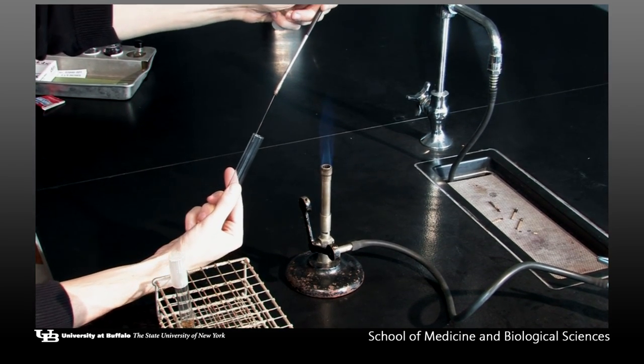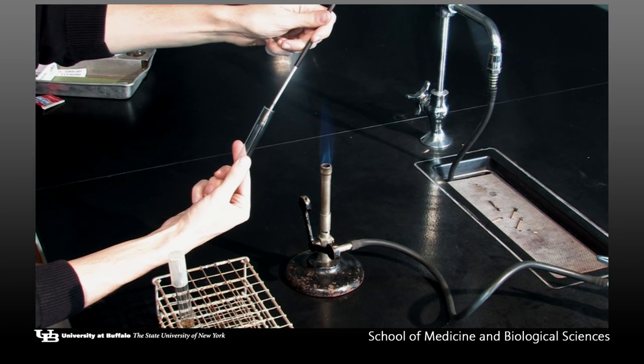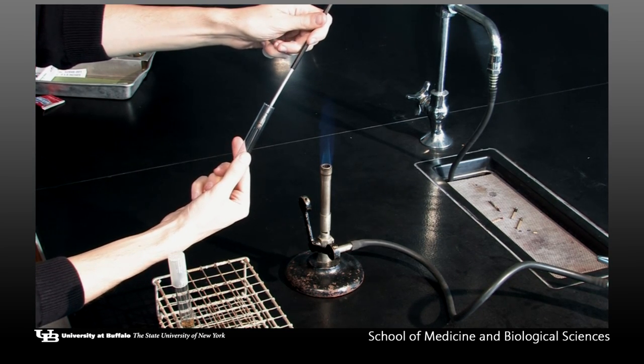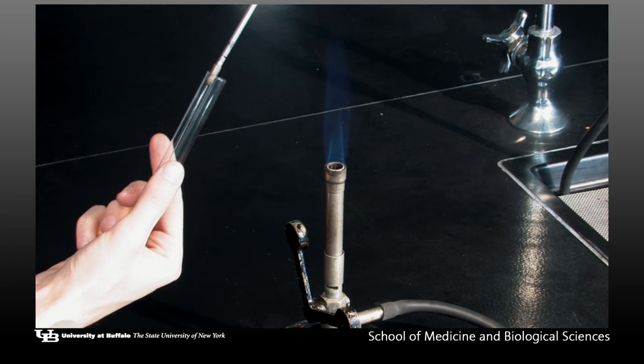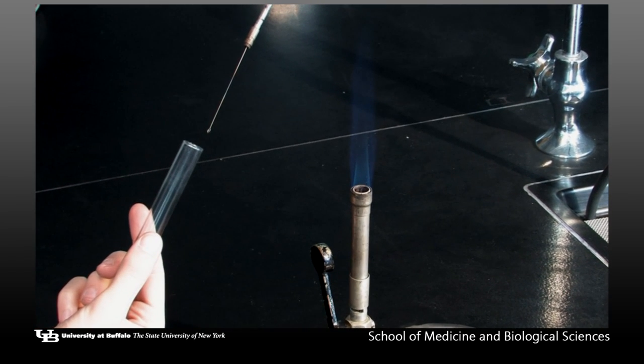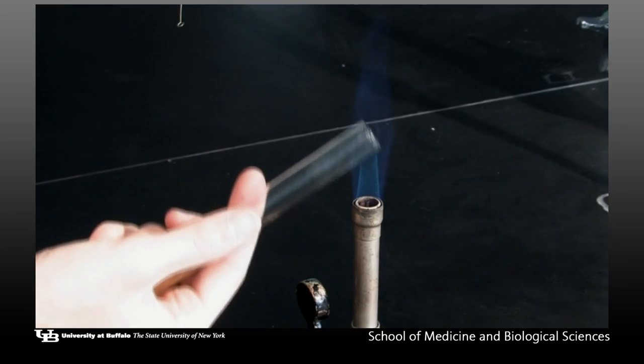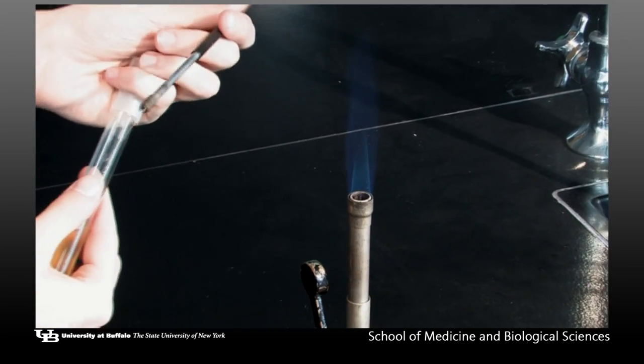Holding the loop hand still, move the tube up the wire until the tip is in the broth. Continuing to hold the loop hand still, remove the tube from the wire. There should be a film of broth in the loop. Flame the mouth of the tube as before and replace the cap.